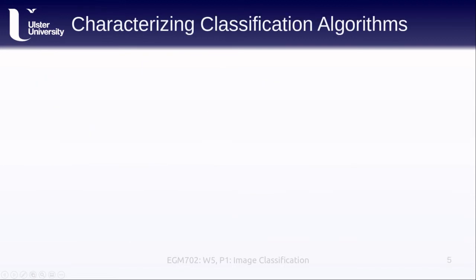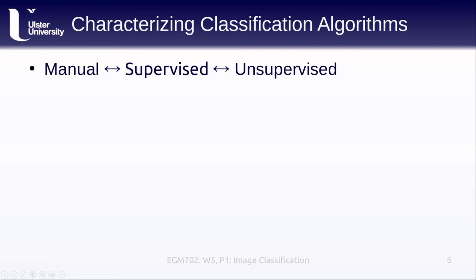There are a number of different ways that we can characterize different algorithms. We've already seen a few of these in EGM 713. We can do manual classification, where we manually identify the pixels in an image, or we can do a supervised classification, where we identify some of the features in an image and the computer uses that information to determine which of the identified classes each pixel belongs to. In an unsupervised classification, on the other hand, the computer automatically decides how to separate groups of pixels with no input from the user.